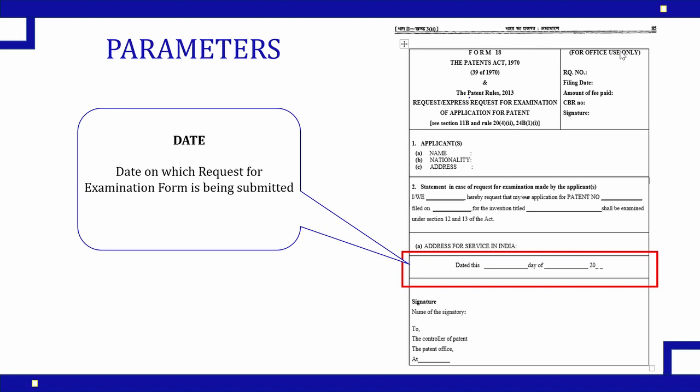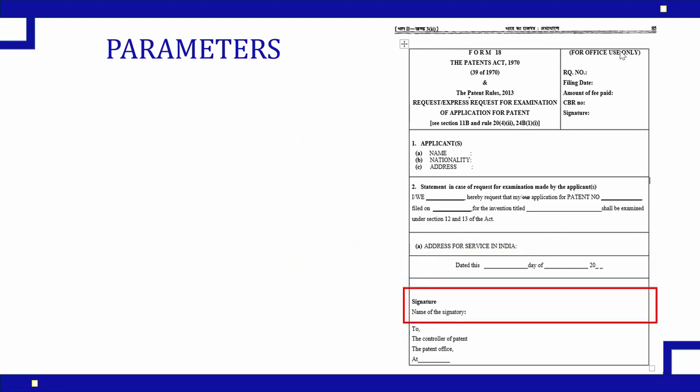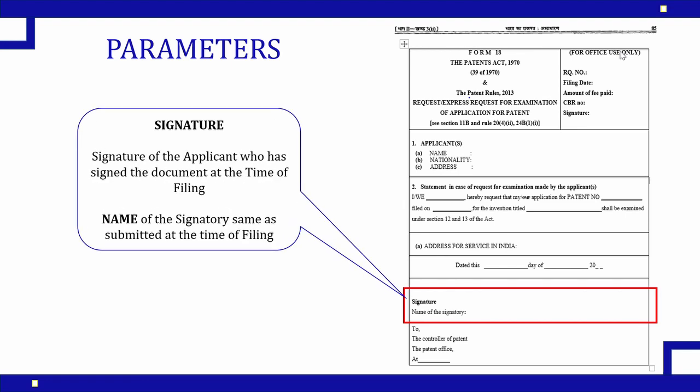The next field is 'Dated' — the date on which Form 18 is being submitted needs to be mentioned here clearly. Next is the signature and name of the signatory. The signatory who submitted their signature at the time of application submission in Form 1 and 2 — the same person's name and signature needs to be mentioned here. If there were multiple signatories, everyone's name and signature needs to be provided at the time of submission of Form 18.